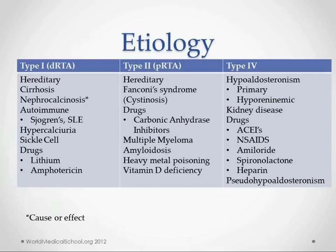So type 1 — what are the causes? Hereditary causes, cirrhosis, nephrocalcinosis, autoimmune disease like Sjögren's or lupus, hypercalciuria (which is related to nephrocalcinosis), sickle cell disease, and drugs like lithium and amphotericin. So the main ones: cirrhosis, hypercalciuria, autoimmune disease, and drugs.